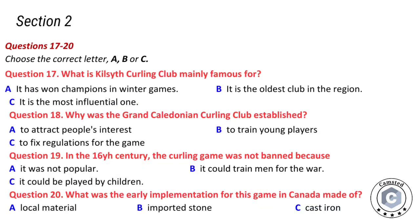Before you hear the rest of the talk you have some time to look at questions 17 to 20. Curling is thought to have been invented in medieval Scotland, and outdoor curling was very popular in Scotland between the 16th and 19th centuries as the climate provided good ice conditions every winter. Kilsyth Curling Club is renowned as the first club in the world, having been formally constituted in 1716, and widely influencing ice curling development.